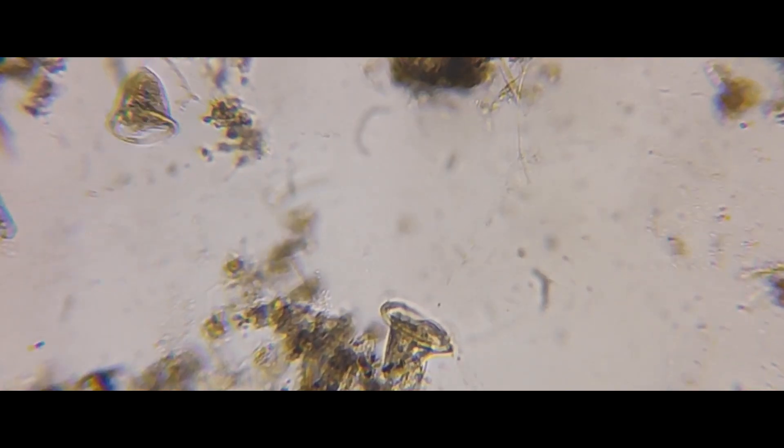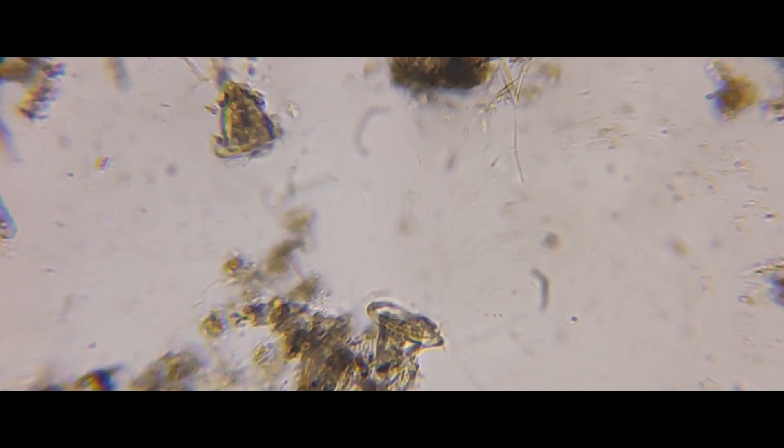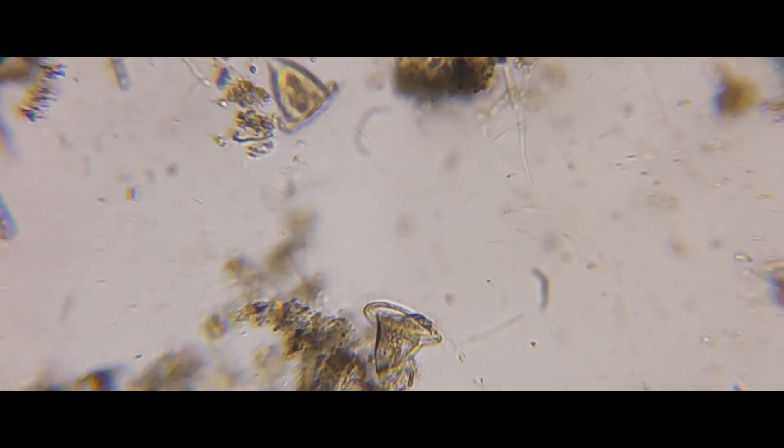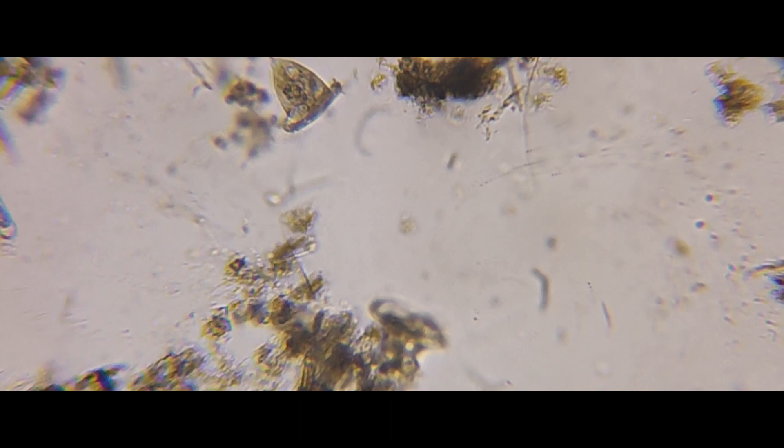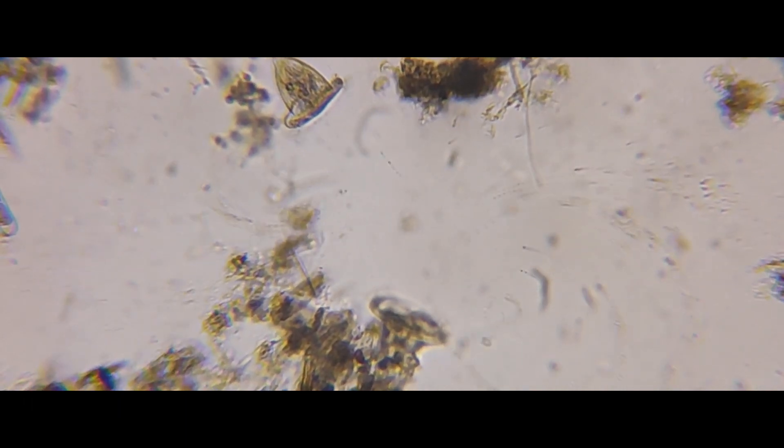Vorticella, such a fitting name. They are living vortex-making machines. You can check out how this one stirs the water around itself with the small hair-like organelles called the cilia.